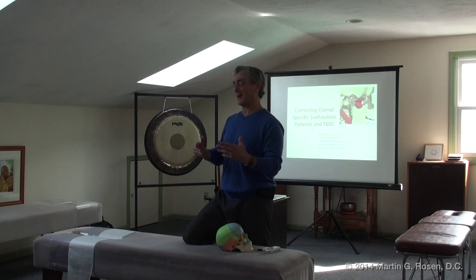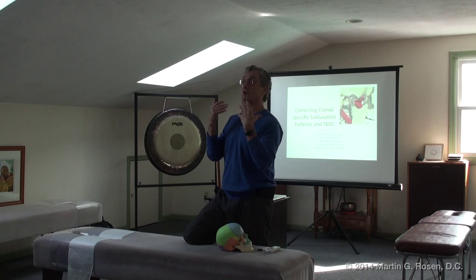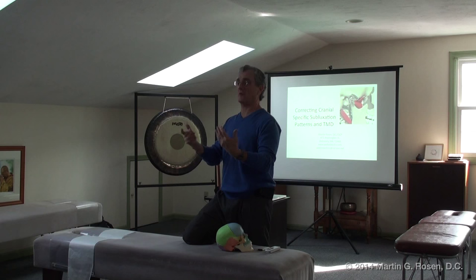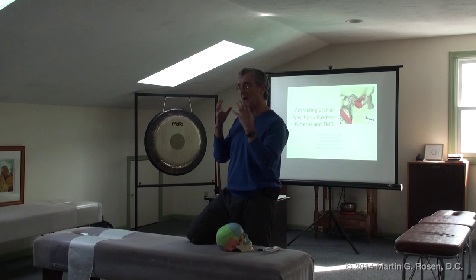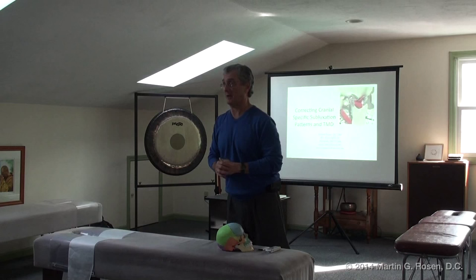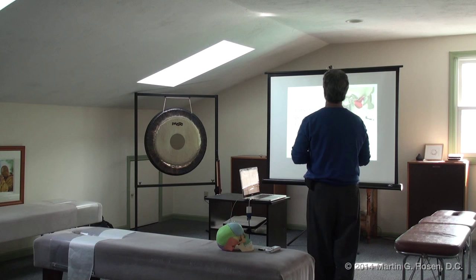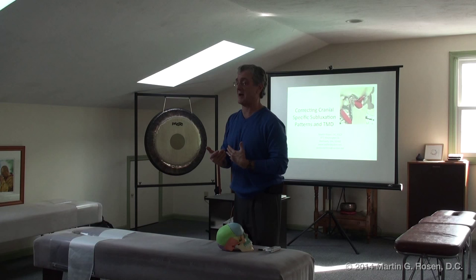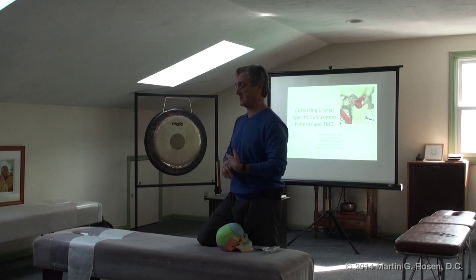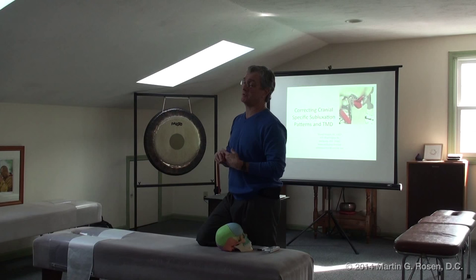Depending on if it's an ascending or a descending pattern, it's very rare, unless there's been severe trauma, that the temporomandibular joint is the crux of the problem. It usually is a compensatory reaction to either a pelvis, a cervical, or a cranial fall pattern. Because it has a lot of flexibility, a lot of mobility, and it's built to open 2,500 to 3,000 times a day — it's built for the long haul. The idea today is to look at the specific subluxation patterns that set up the temporomandibular joint imbalance, correct those first, and then address the TMJ. It's a quicker and more effective process for the patient, and more efficient over the long term.